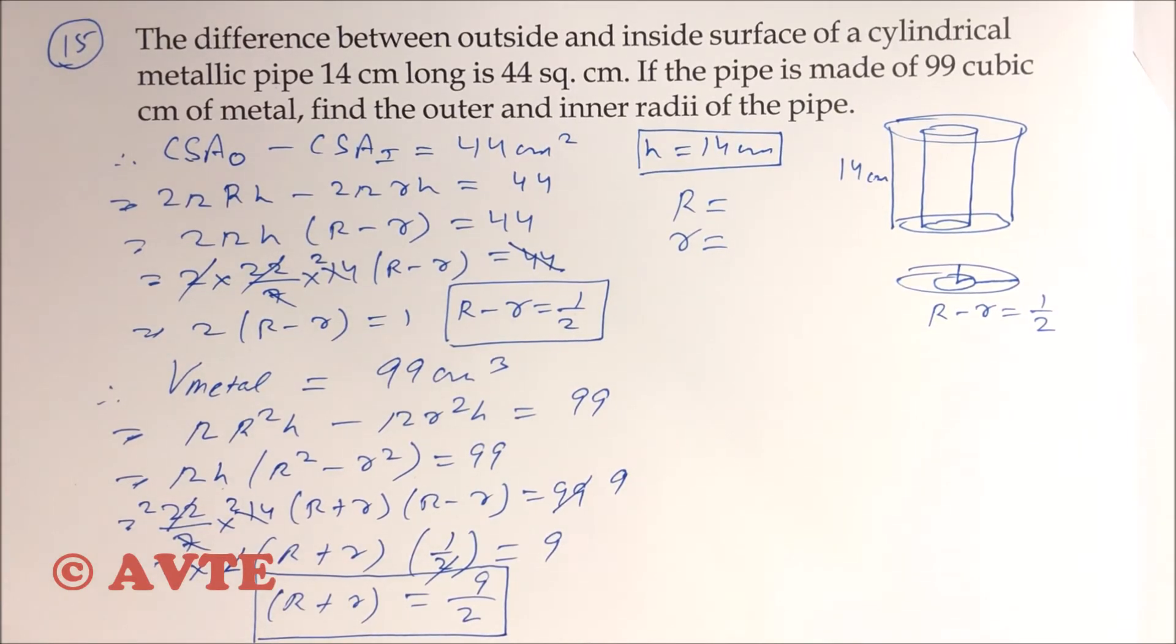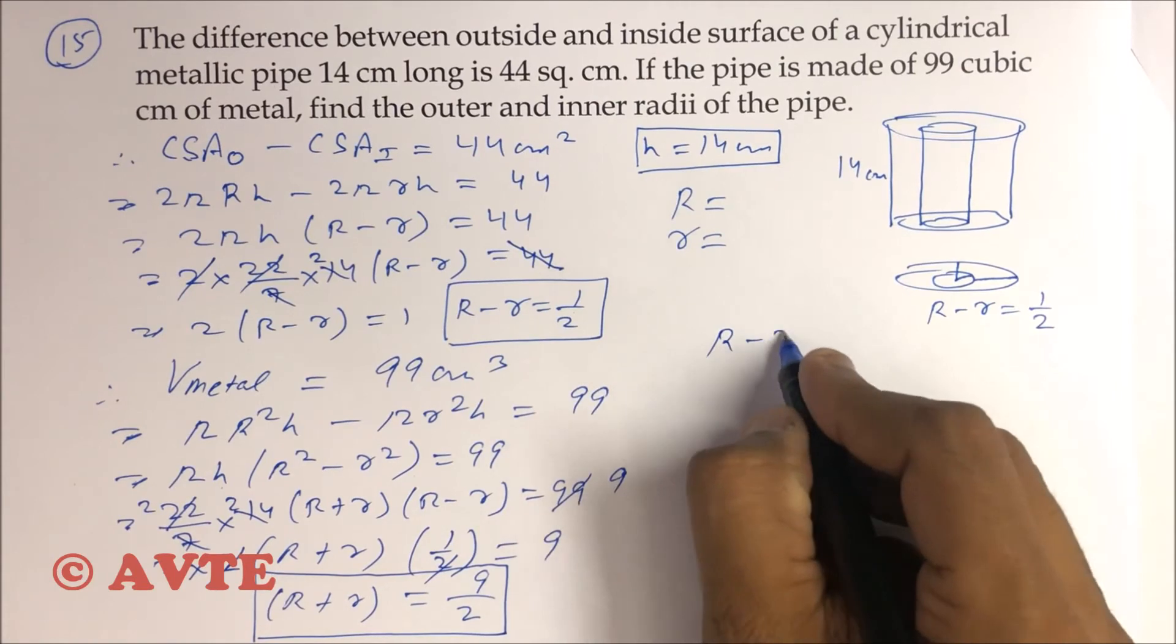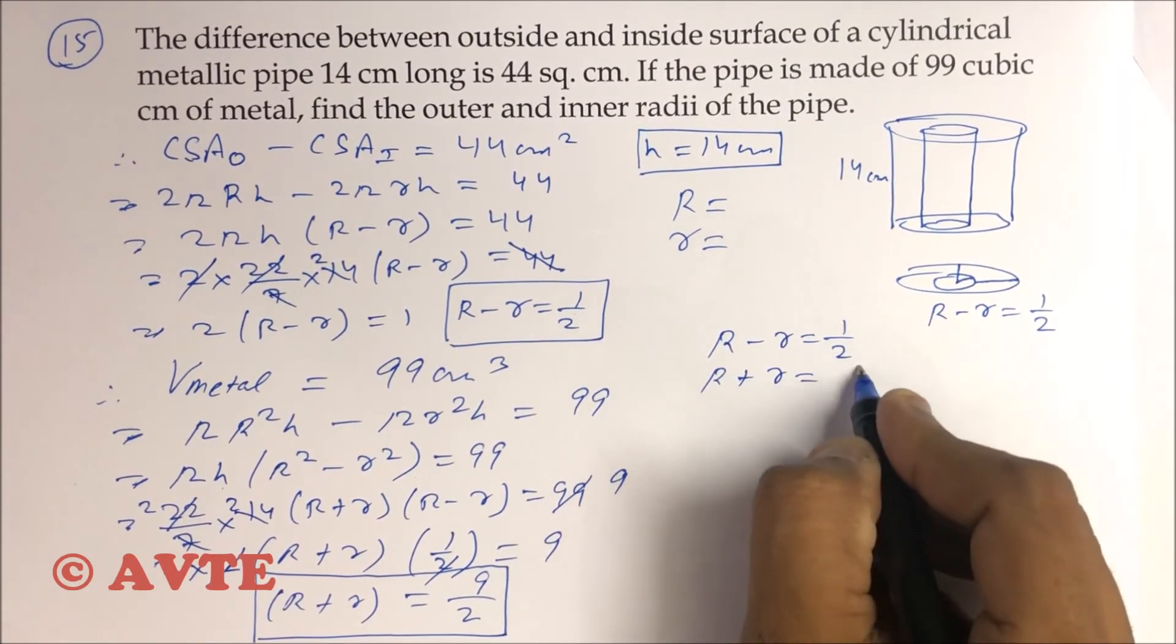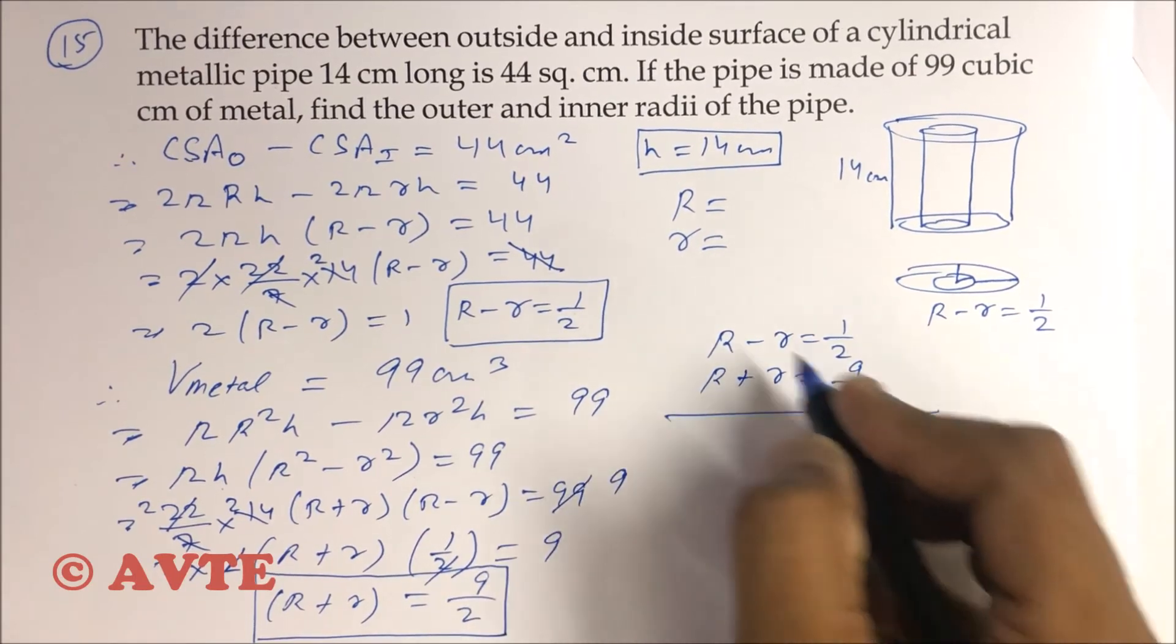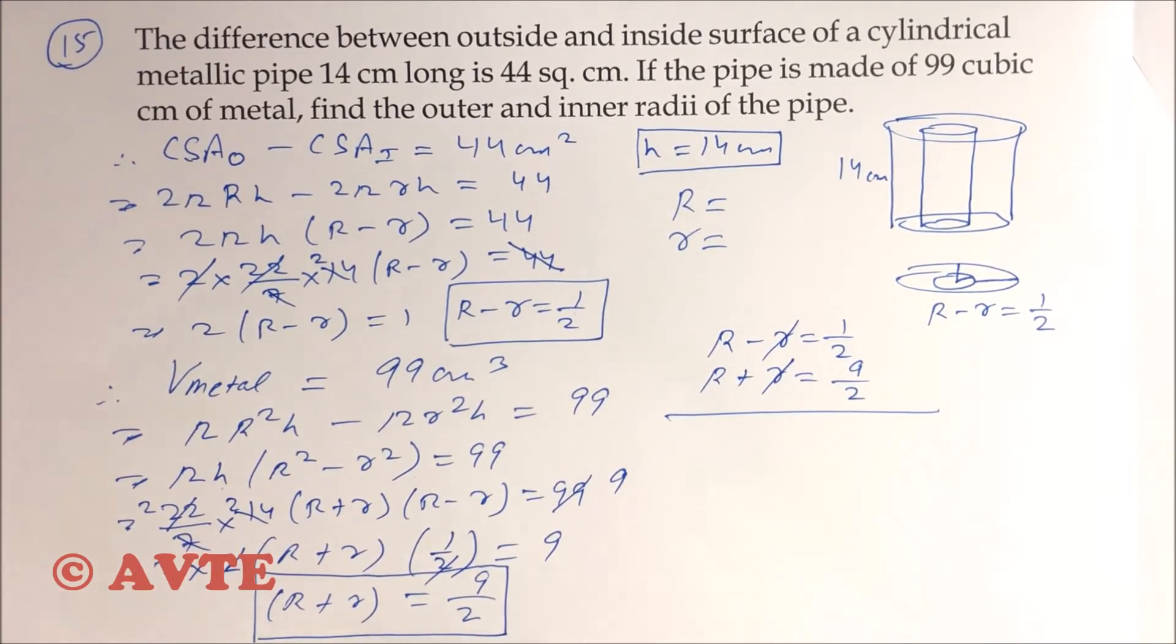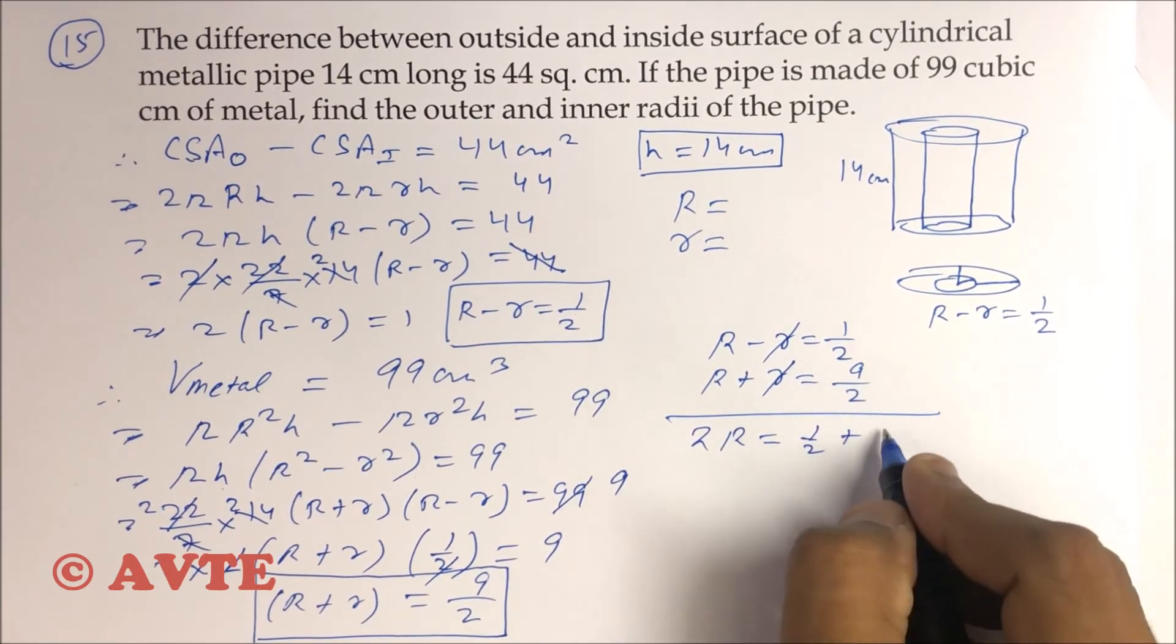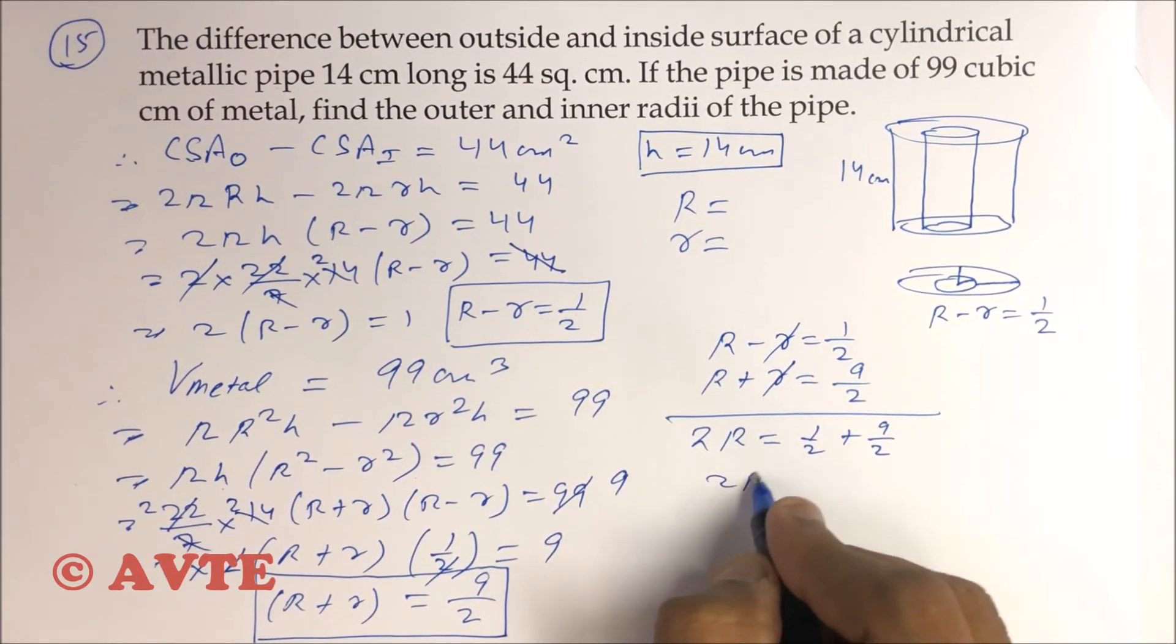So guys this is your second relation of two radii. The first is the difference between 2 radii is 1/2, and R + r is 9/2. If you add them, this eliminates: 2R = 1/2 + 9/2, that means 2R is 10/2, that is 5.